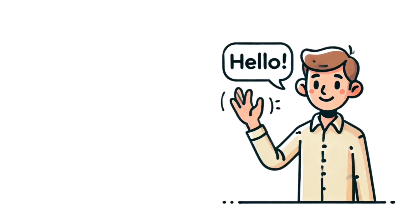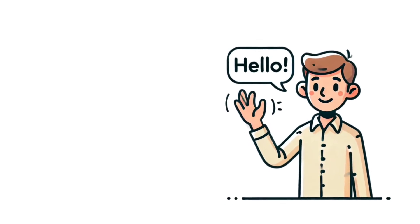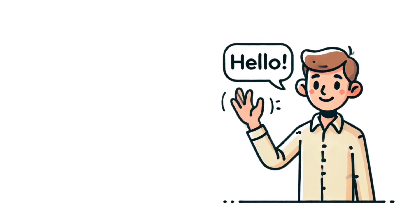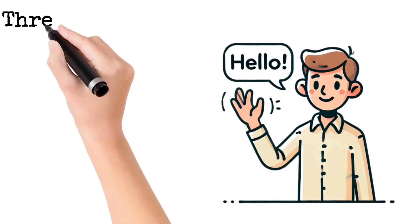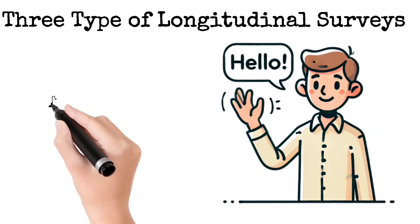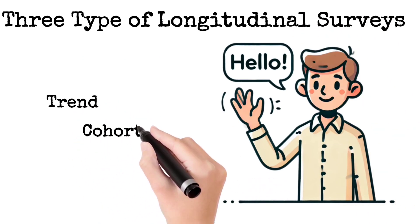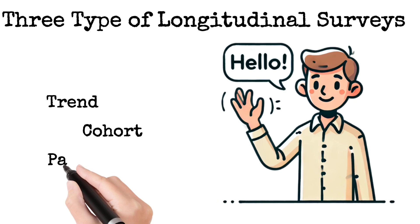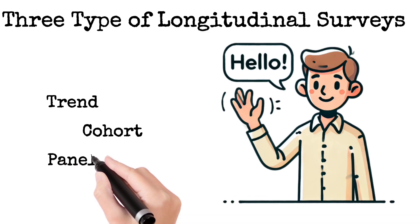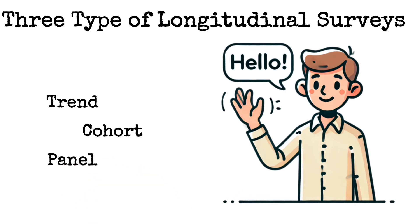Hello and welcome. Today, we're going to break down three types of longitudinal surveys: trend, cohort, and panel. These methods help researchers study changes over time. Let's make it simple and clear with some educational examples.